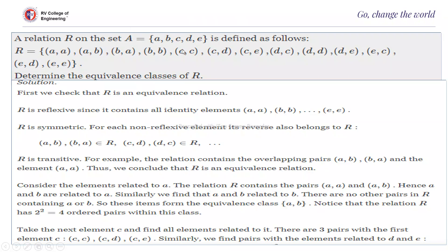A relation on set A = {A, B, C, D, E} is defined by R with given elements. Determine the equivalence classes of R. First, we check whether R is an equivalence relation. R is reflexive since it contains all identity elements (AA, BB, CC, DD, EE). R is also symmetric because whenever AB is there, BA is there; CD implies DC; DE implies ED; EC and CE. It is also transitive — checking ordered pairs like (AB, BA) gives AA which is already there. Therefore R is an equivalence relation.